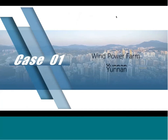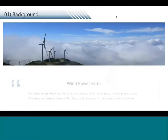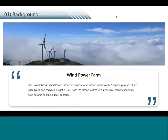For the first case study, I chose the Wind Power Farm project that we completed in Yunnan Province, China. For this Wind Power Farm, they have 33 turbines and each hub is 69 meters high — a pretty big and giant structure. Since the farm is located in a remote area, security and safety became one of the biggest concerns.